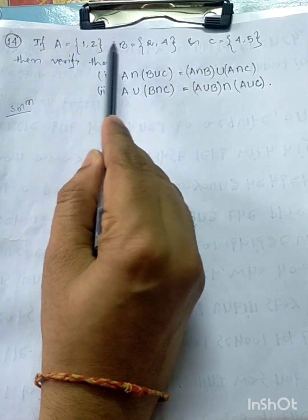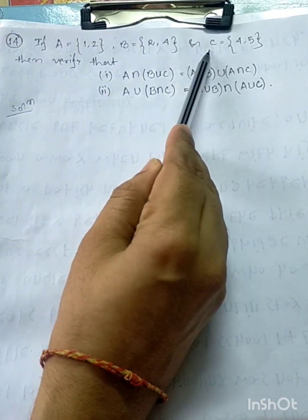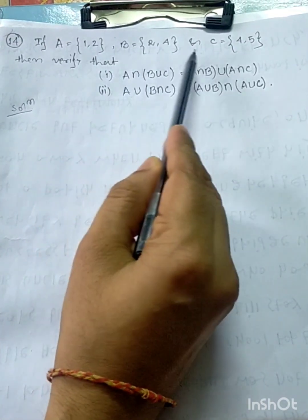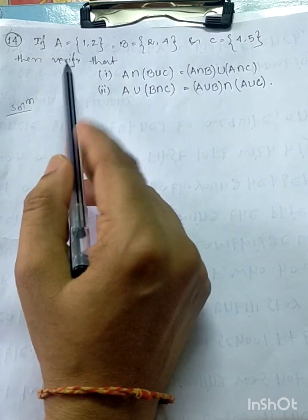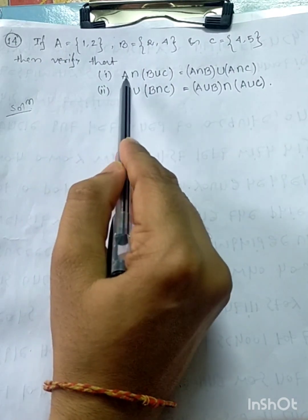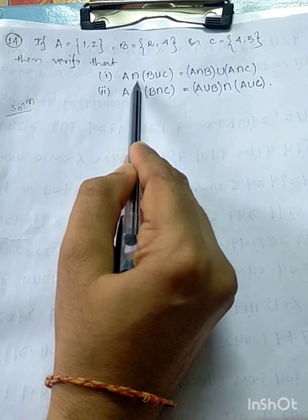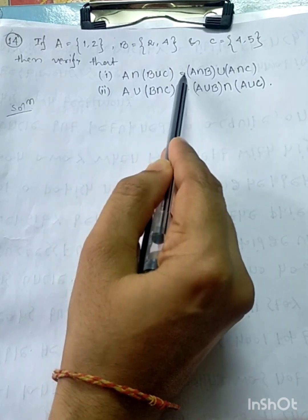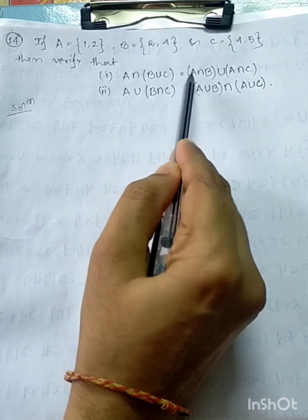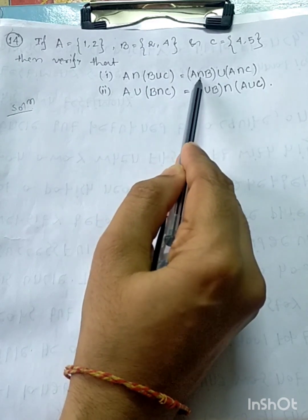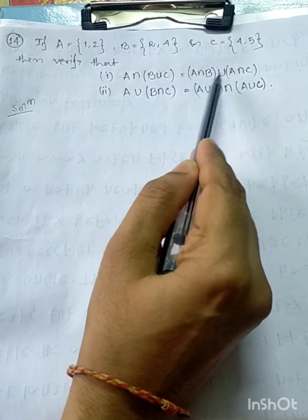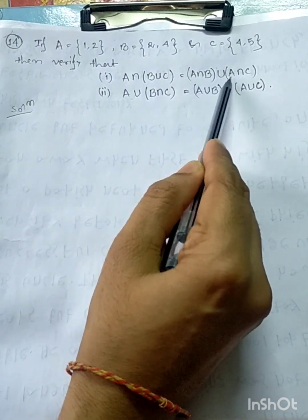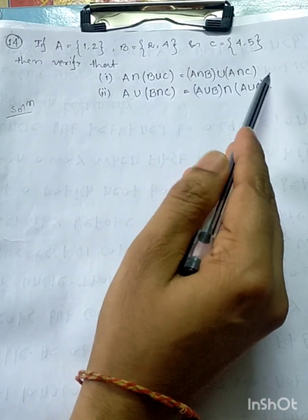If A, B, C three sets are given, then verify that A intersection B union C is equal to A intersection B union A intersection C.